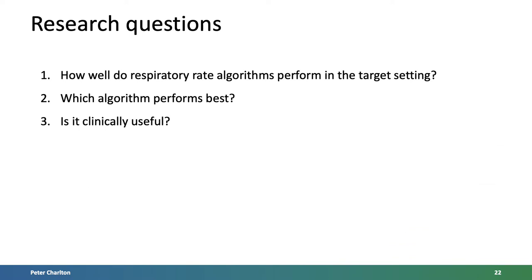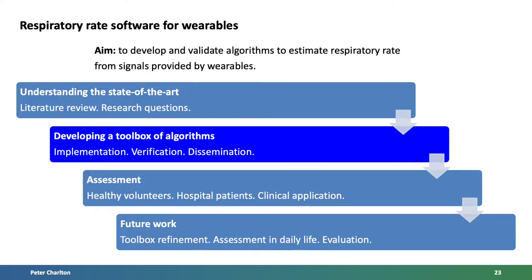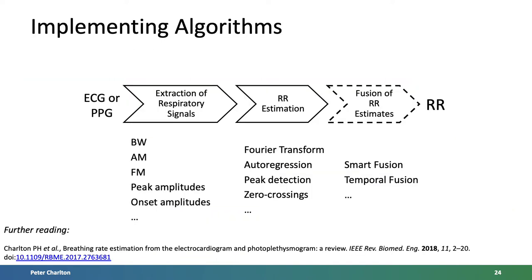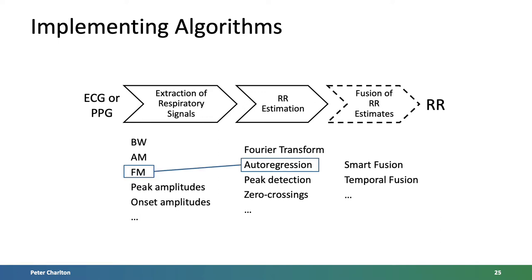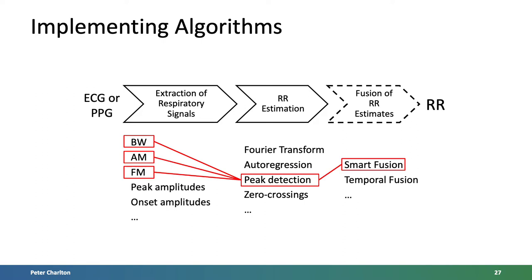This led us to design our research questions: how well do respiratory rate algorithms perform in the target setting, which algorithm performs best, and is it clinically useful? Our next step was to develop a toolbox of algorithms. There are several techniques that can be used at each stage of an algorithm. We identified and implemented as many of these techniques as we could. To create an algorithm, one typically chooses a technique at one stage and joins it with a technique from another stage, and you could add on the fusion stage.